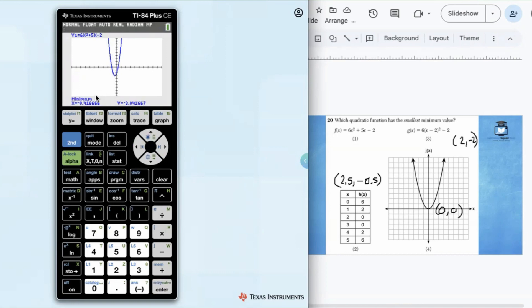And now we're going to calculate. So our vertex is negative 0.416, comma, negative 3.04. So this function clearly has the smallest minimum value because negative 3 is smaller than negative 2. So the correct answer is choice 1.